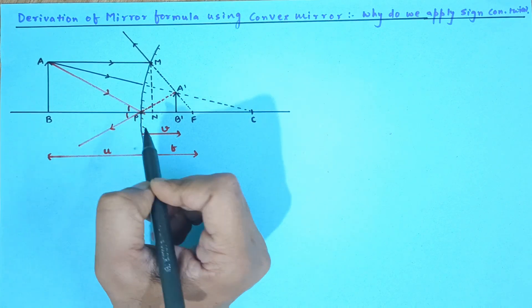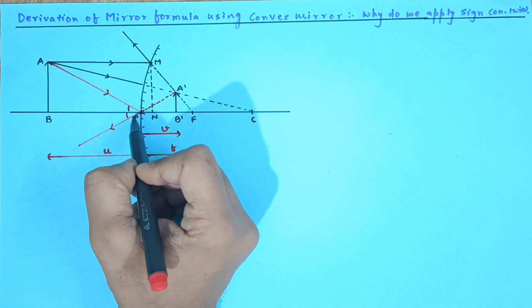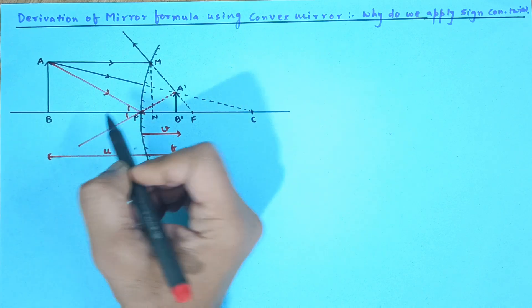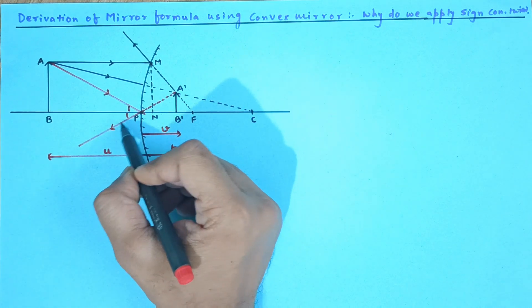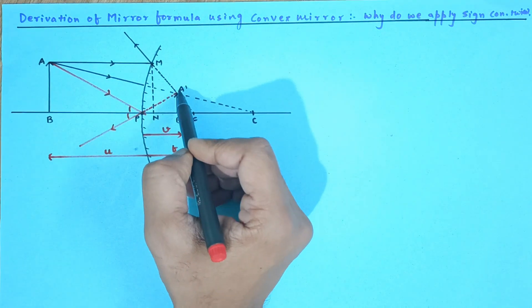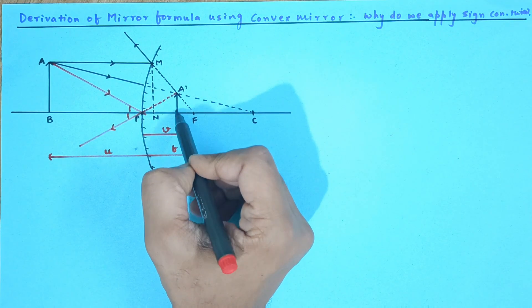So this angle and this angle will be the same. So the reflected ray will be on the other side of the normal and when you extend it backwards, this reflected ray and this reflected ray you will get a diminished and virtual image behind the mirror.